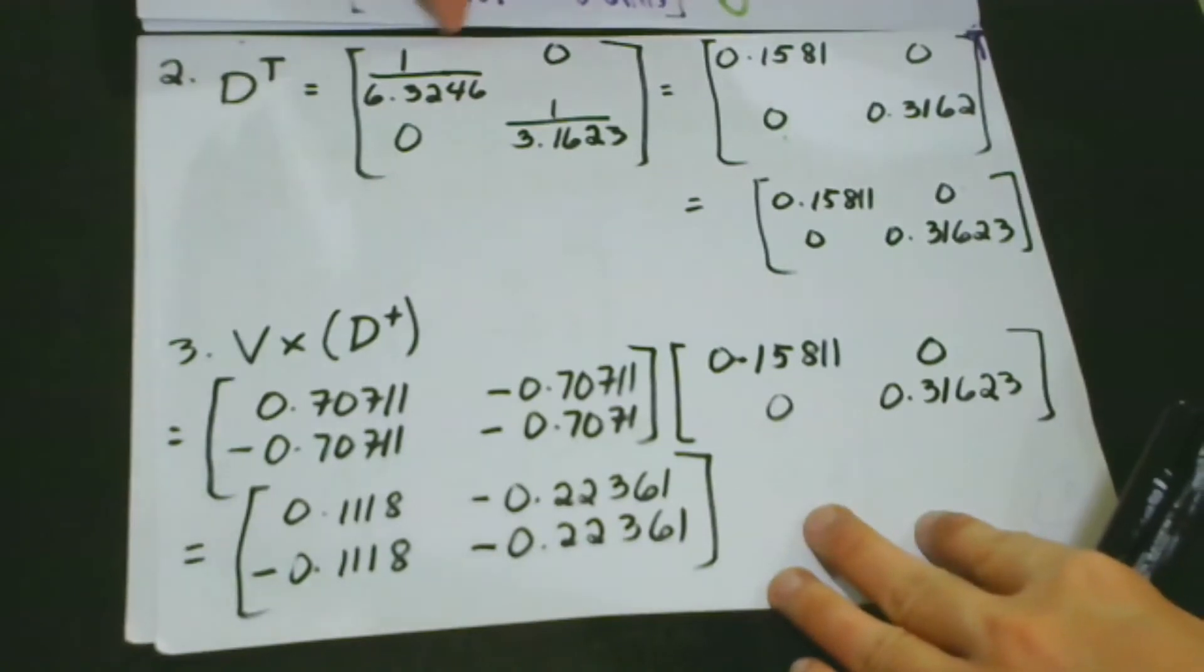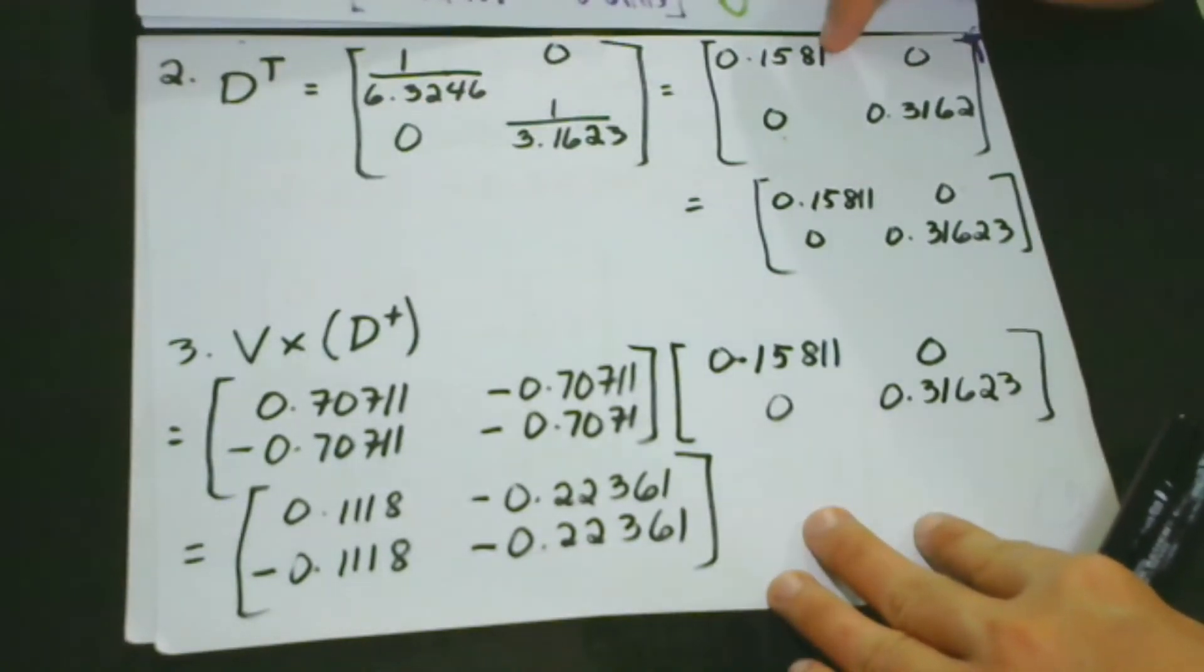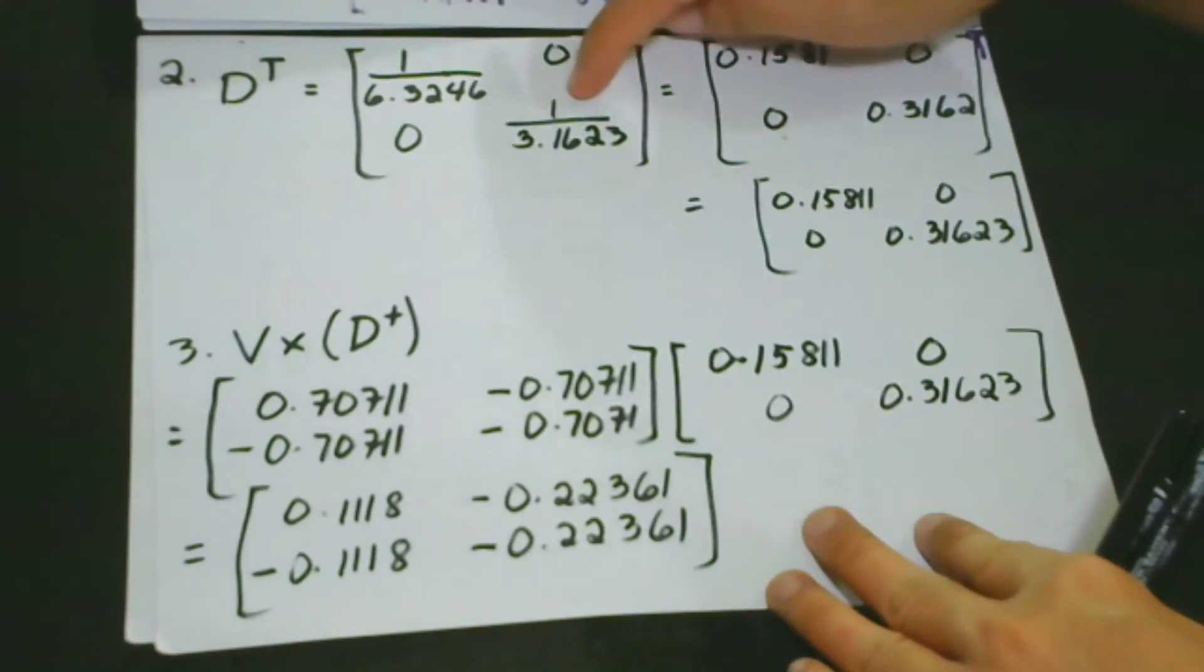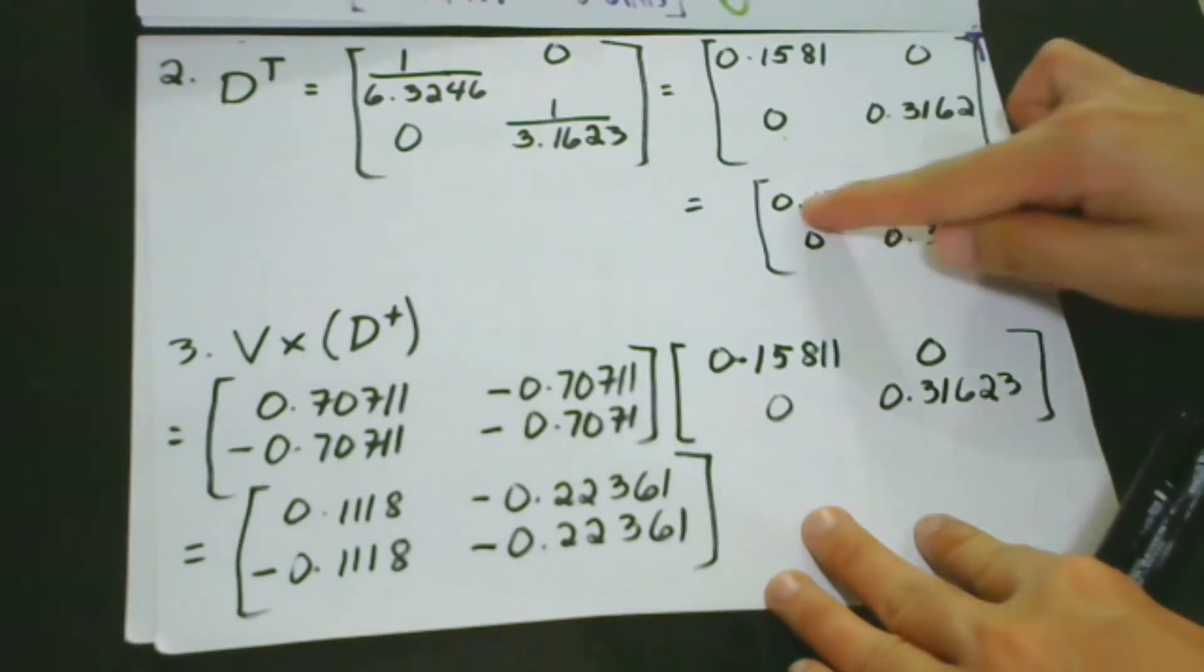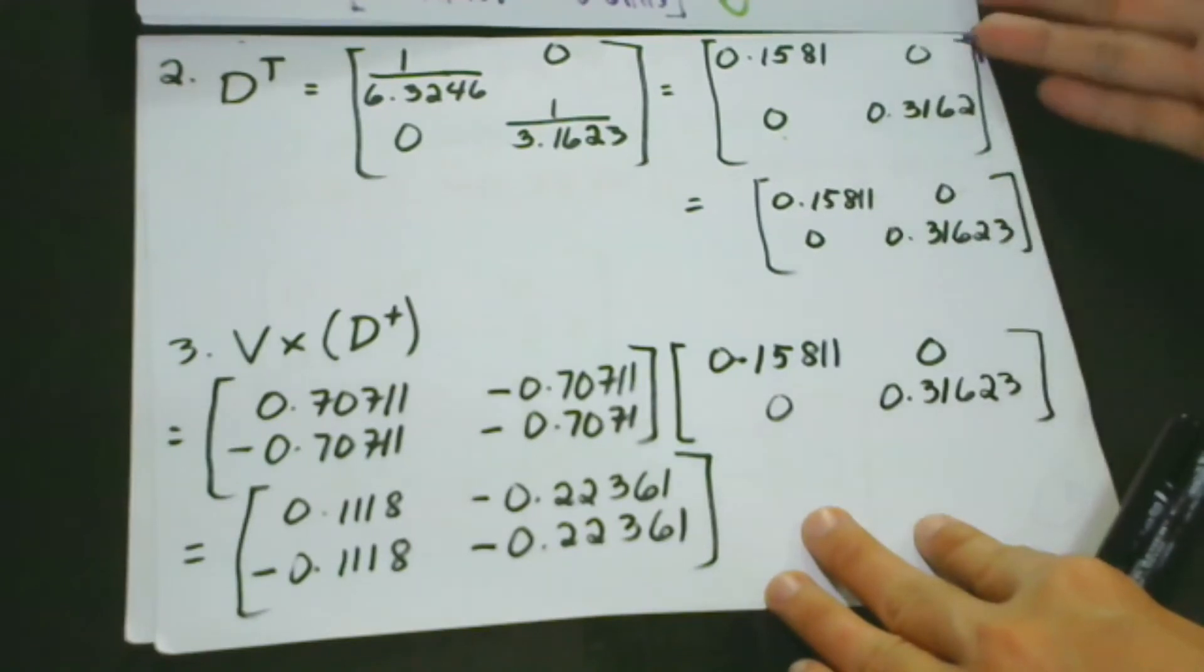When we divide 1 by 6.3246, we get this one. And when we divide 1 by 3.1623, we get this one. And then, taking the reciprocal, now we get this. But again, it's because it's a square matrix. When we get the transpose, then we still arrive at the same thing. But of course, if it would be a different case, then it would be different.